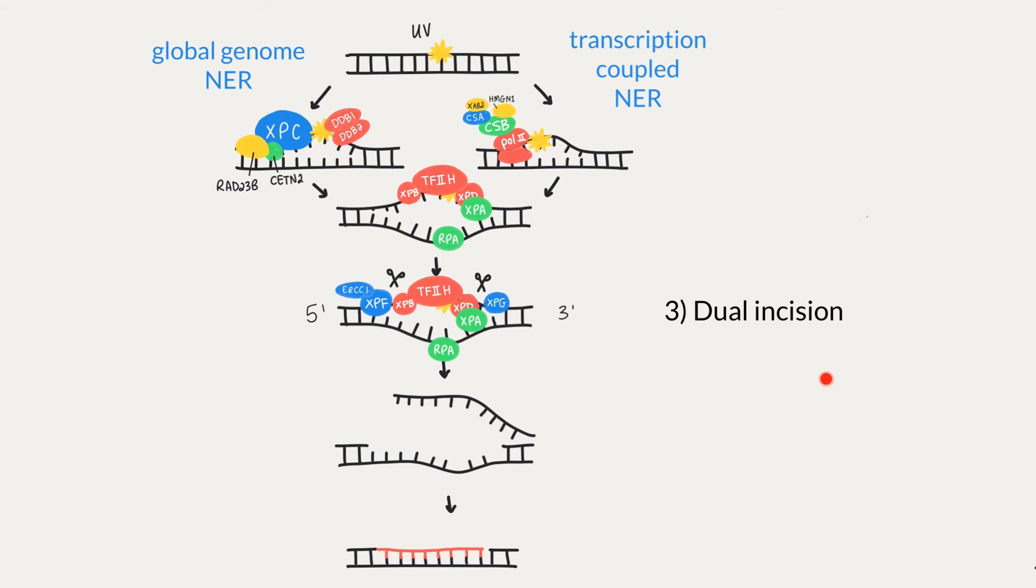Our third step is dual incision. For dual incision, XPA recruits the XPF-ERCC1 endonuclease to incise the damaged DNA 5' to the lesion. Once XPA recruits XPF-ERCC1, XPG incises 3' to the bubble. So we've created two incisions on both ends of the lesion.